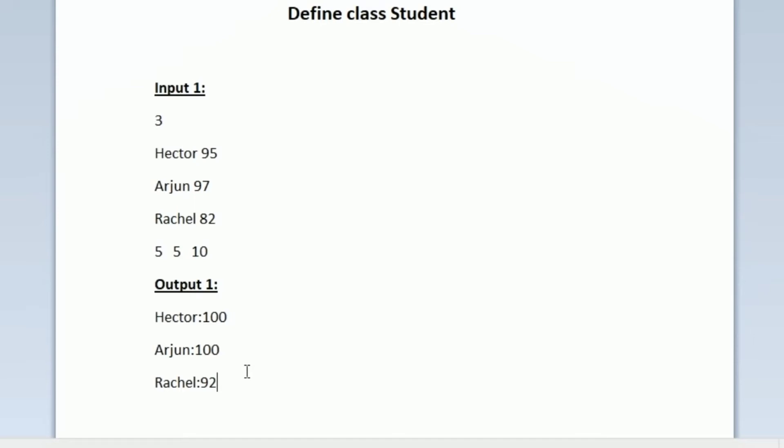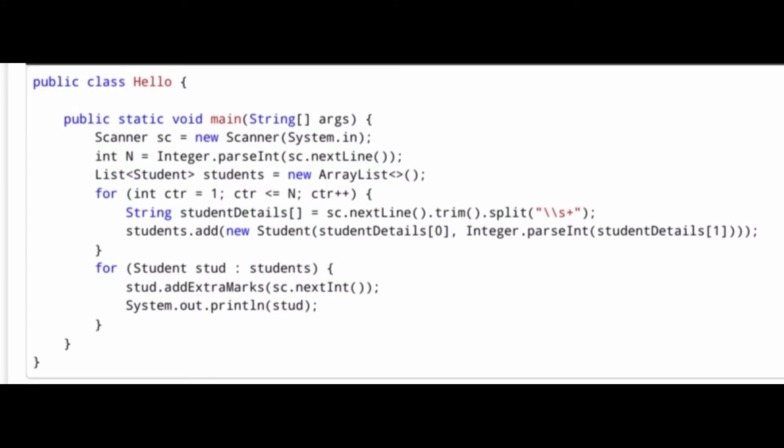Now let us see how we will define the class named Student to get the correct output. This is the program already given. First, the integer n is accepted as input, then a list named students is created and we loop n times. In every iteration, the student detail is stored as an object inside the list. After the loop, we iterate through each object, add extra marks, and print the new marks for each student.